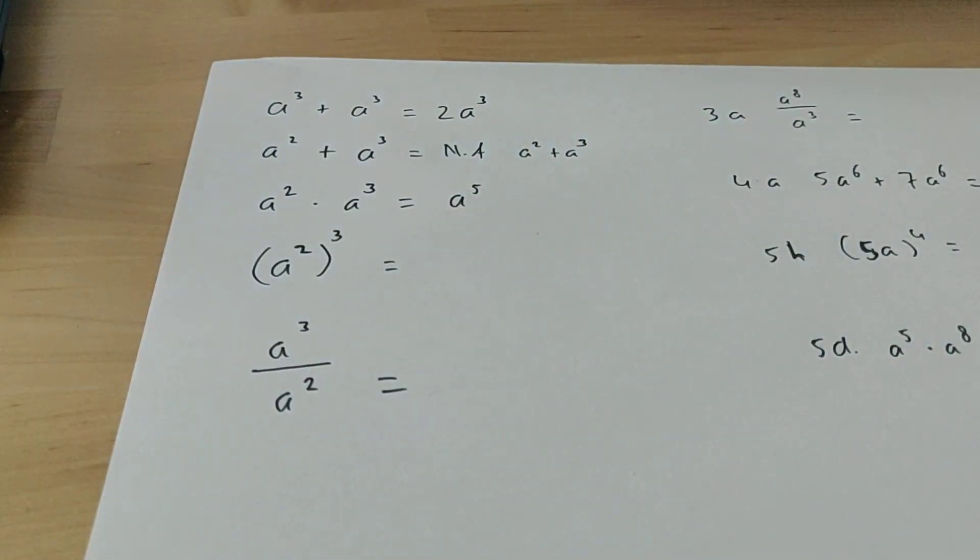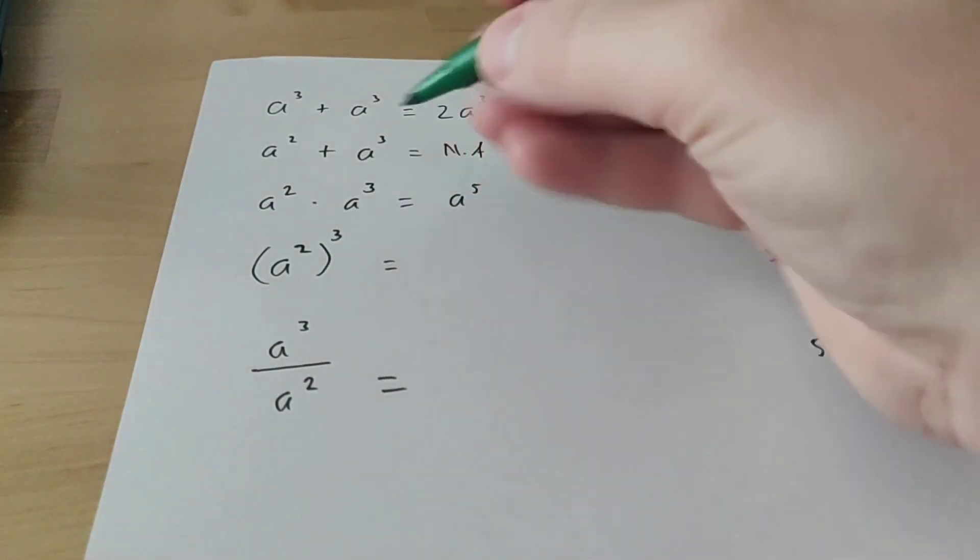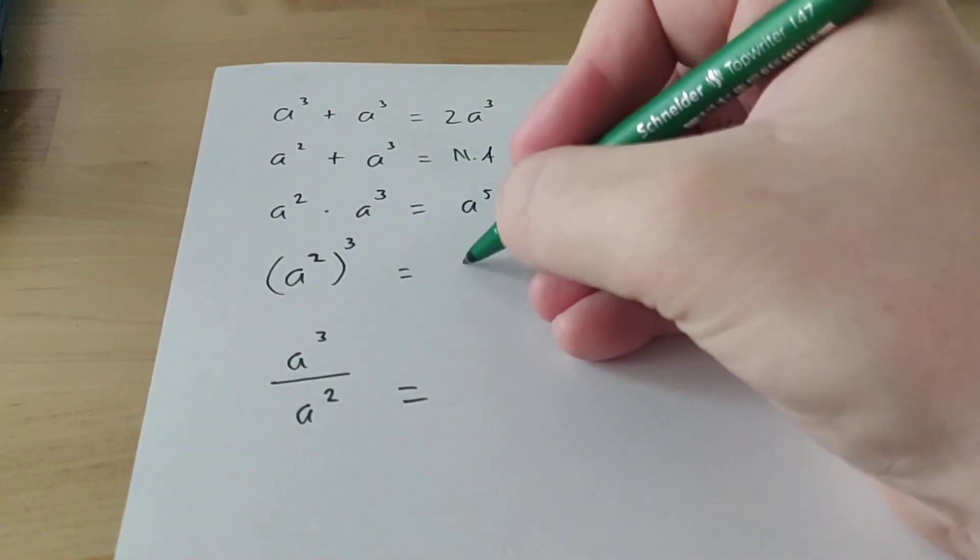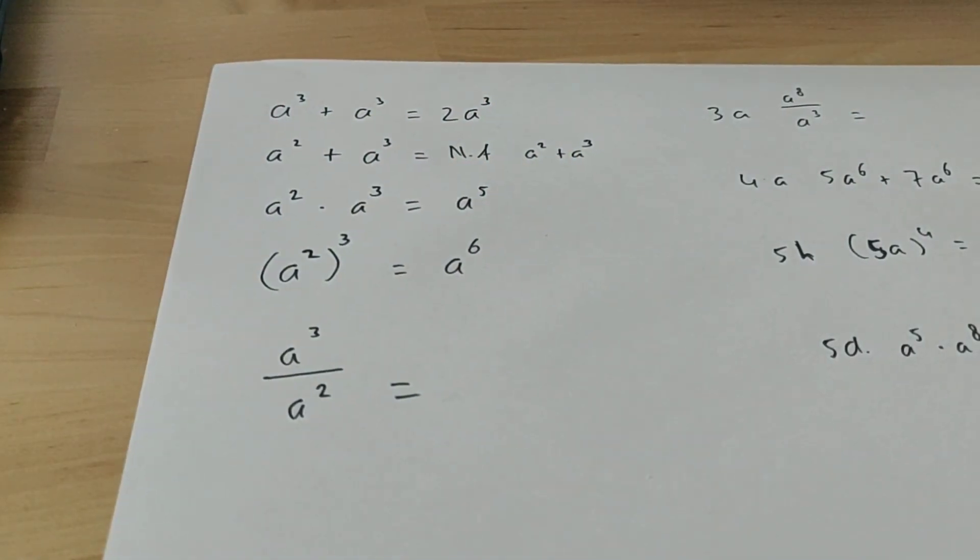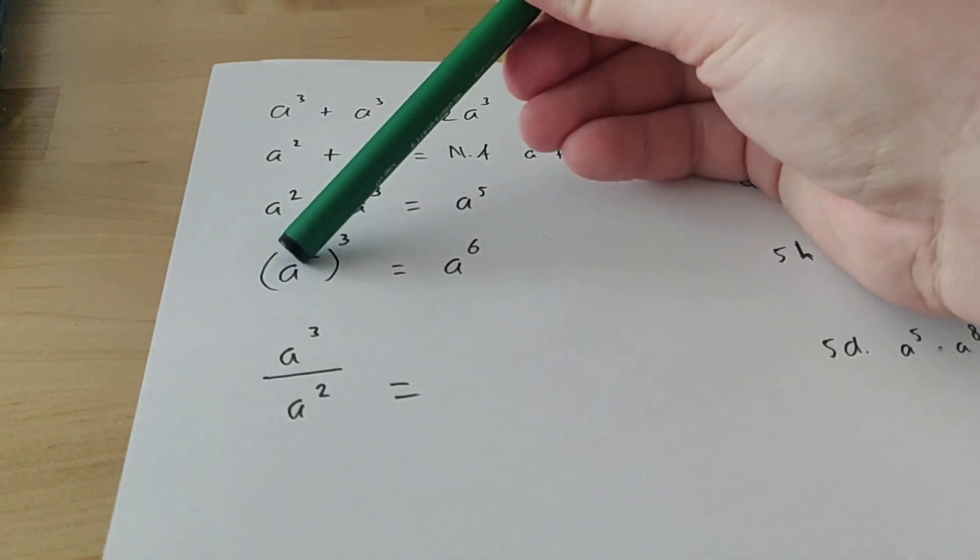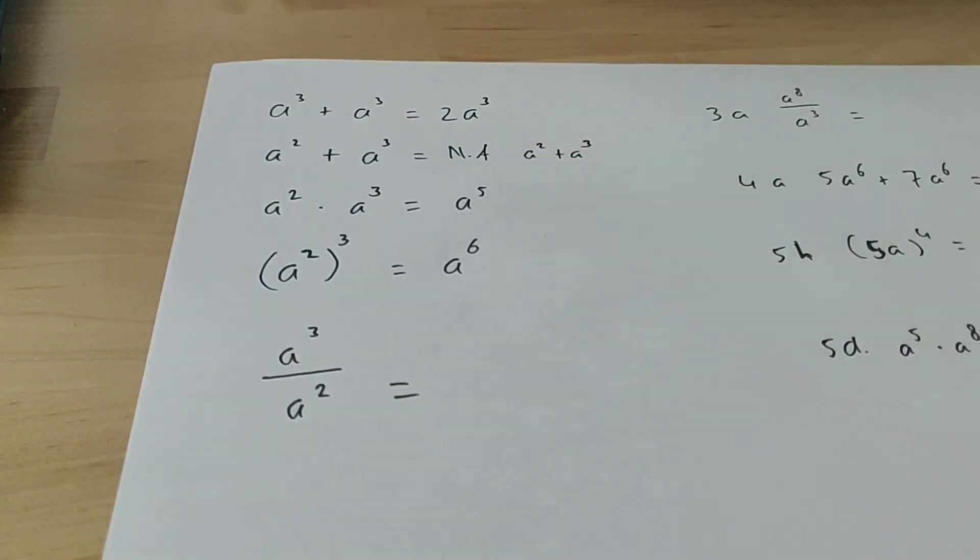A power to a power, however, then you do not plus each other like the previous example. But here you do times each other. So this will be to the power of 6. And the reason for that is that these are 2 a's, but you have that 3 times. So you have 3 times 2 a's, so that's a to the power of 6.